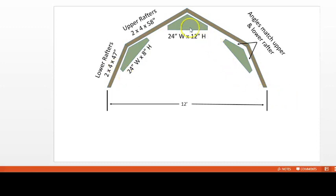The peak gusset is 24 inches wide and 12 inches tall. The side gussets are 24 inches wide but they're only about 8 inches tall. Note that the angles for the side gussets are cut to match the angles of the upper and lower rafters.